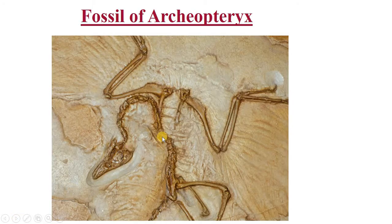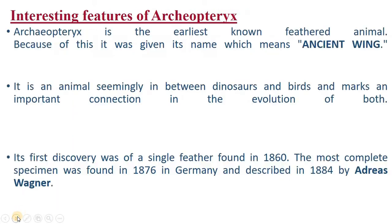Here you can observe the fossil of Archaeopteryx. This Archaeopteryx is no longer found today, but it existed as fossils. The first discovery of Archaeopteryx was a single feather found in 1860. The complete specimen was found in 1876 in Germany and described in 1884 by Anders Wagner, a German person who described the Archaeopteryx for the first time.